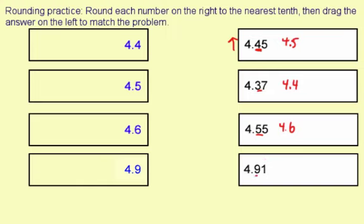Now 4.91, we're rounding the 9. Look at the 1. 1 is actually less than 5, so it's going to be rounded down to 4.9.